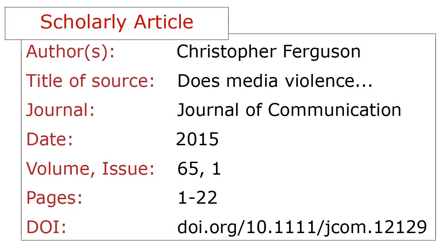For a scholarly journal article, you'll need the author and title of the article. You'll also need the title of the journal the article is published in, and the date. The location information includes the volume, issue, pages, and the DOI, which is a unique ID number assigned to the article. The same information is required for articles whether they're print or online.